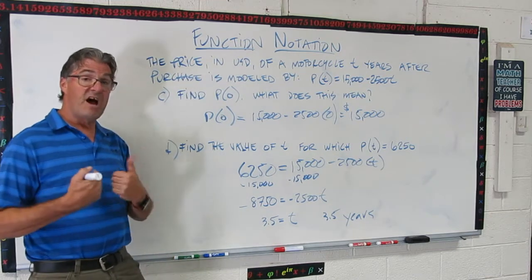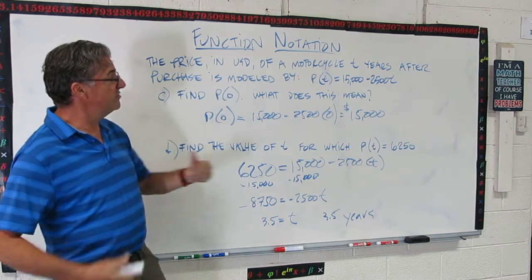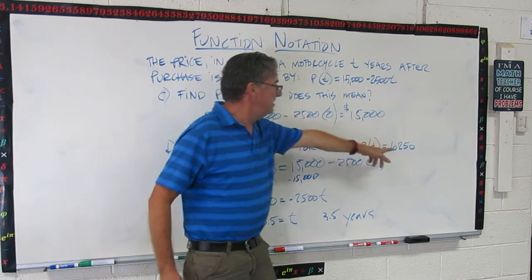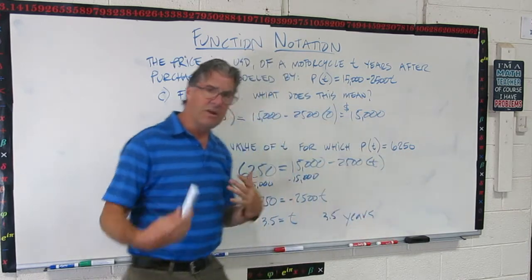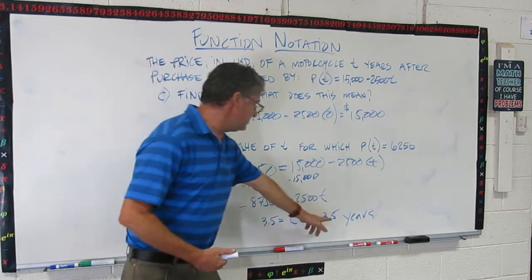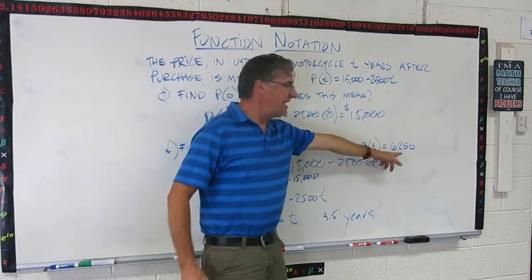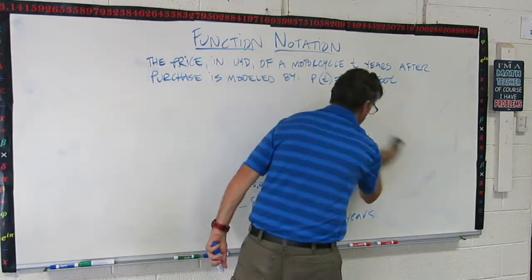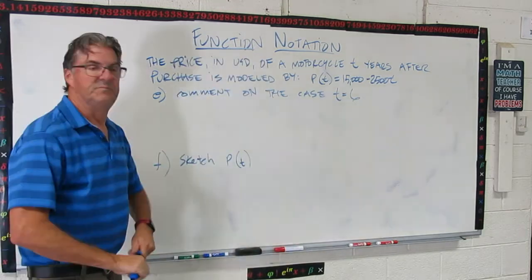And then I just divide both sides through by -2,500. And that makes this go positive and it's 3.5 for t. So it takes 3.5 years for the motorcycle to go down in value from 15,000 to 6250. If you wanted to check your answer, you can take this 3.5, plug it in here, and you should get out 6250.